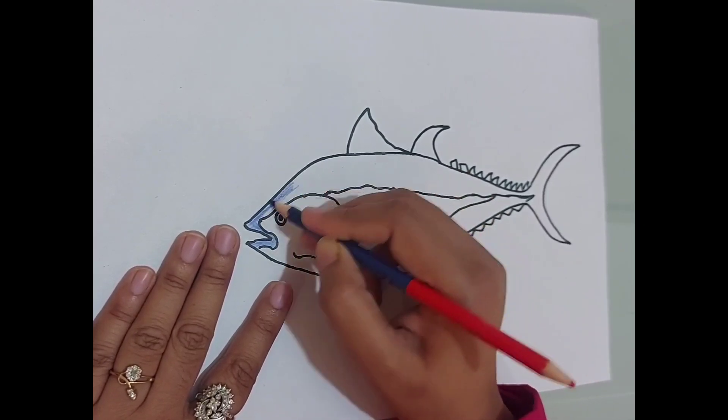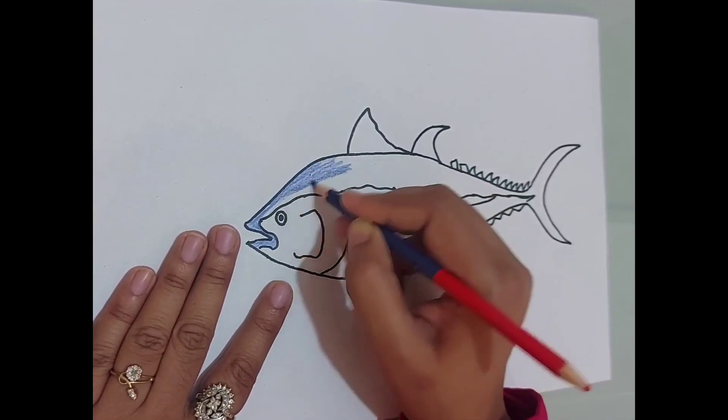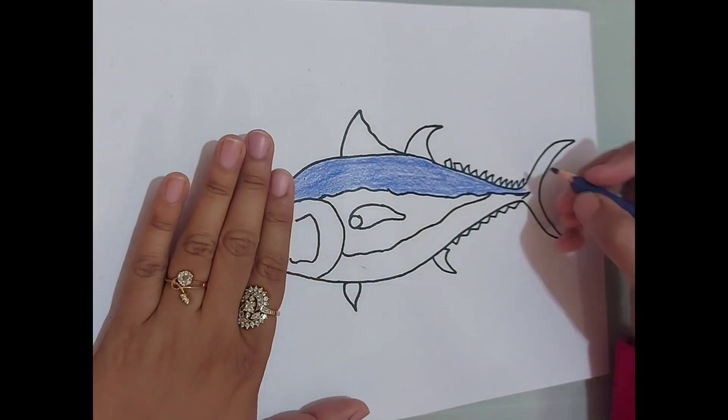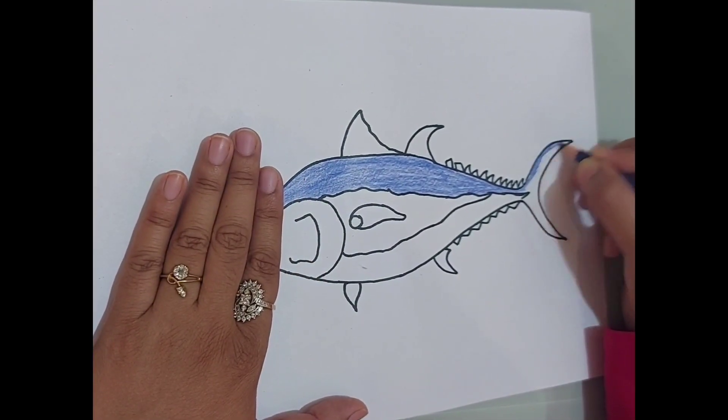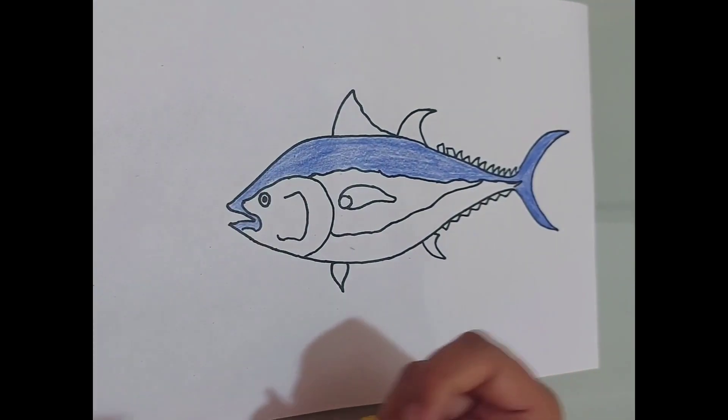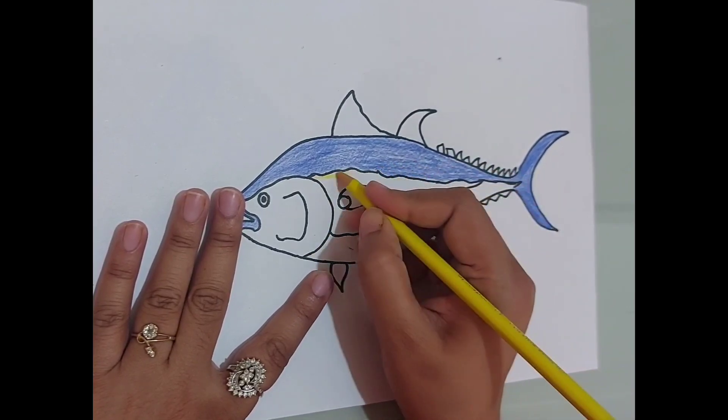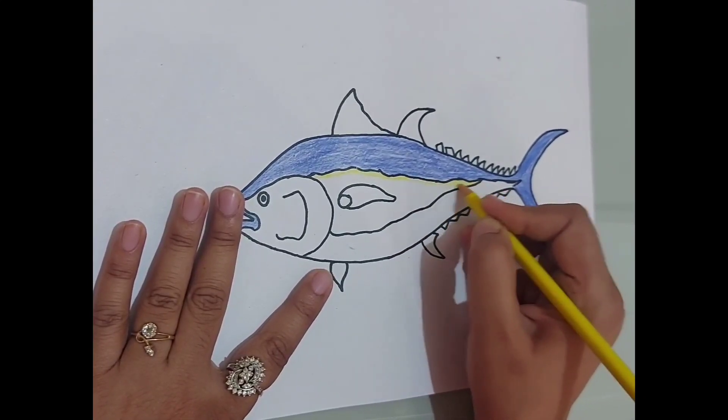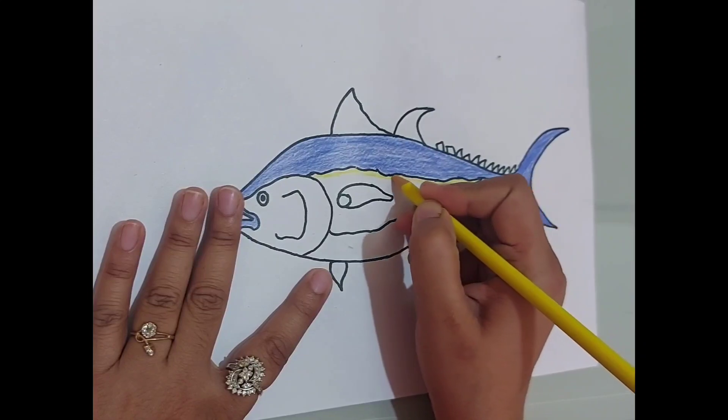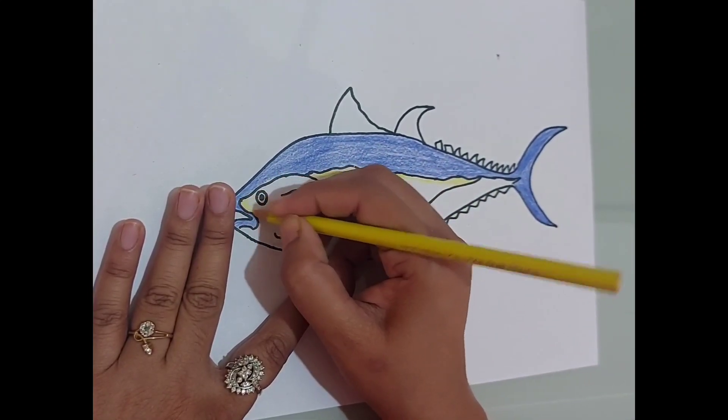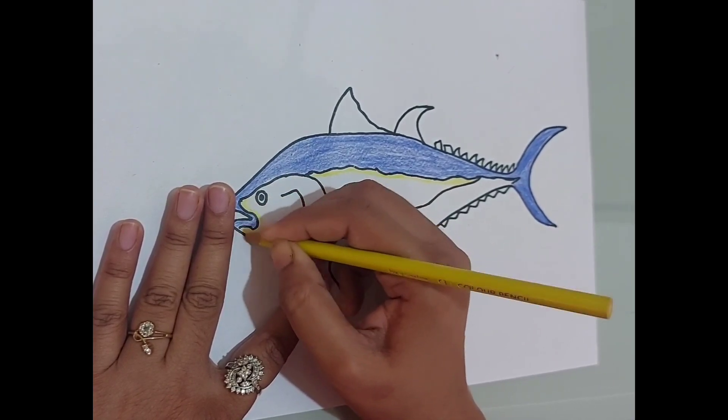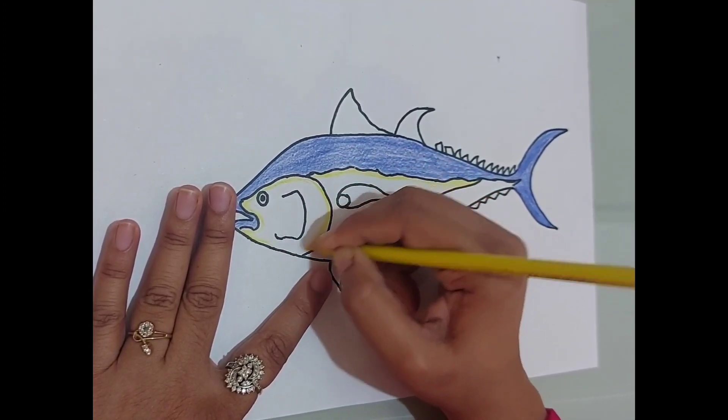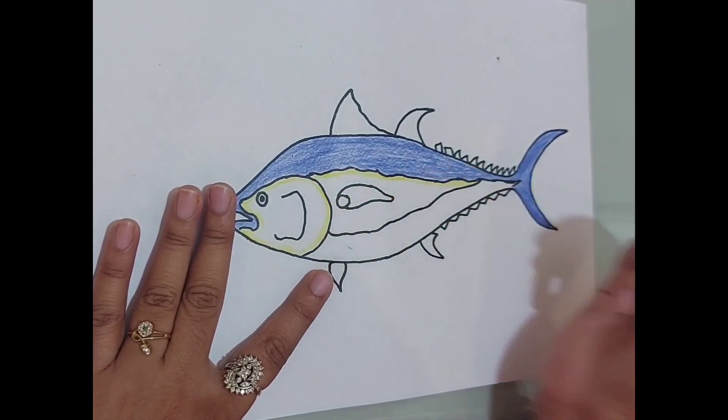Color the upper part of the fish with dark blue color. Also the tail of the fish - color it with dark blue color. Now we will do some yellow color here, and in the mouth also we will do some yellow color highlighting. And it's done.